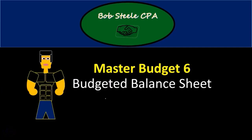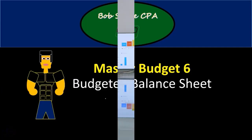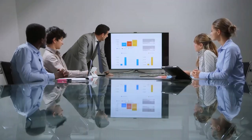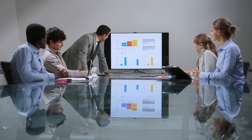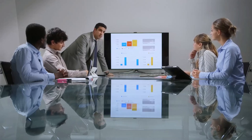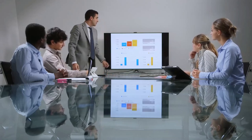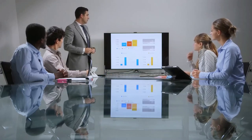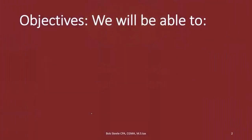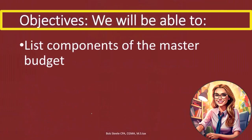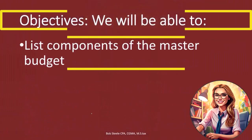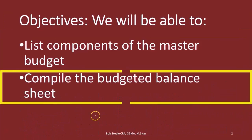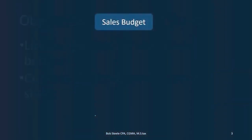Hello. In this lecture we're going to look at the Master Budget Part 6, Budgeted Balance Sheet. If you haven't taken a look at the other five, you might want to do that first because we will be using components of those to compile the balance sheet. At the end of this, we will be able to list components of the master budget and compile the budgeted balance sheet.